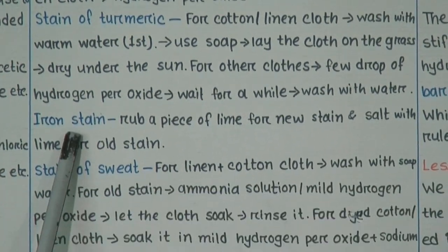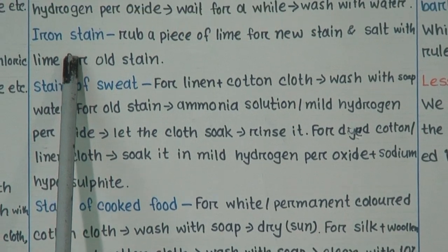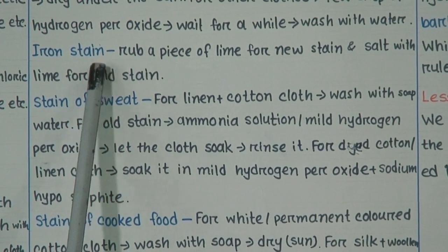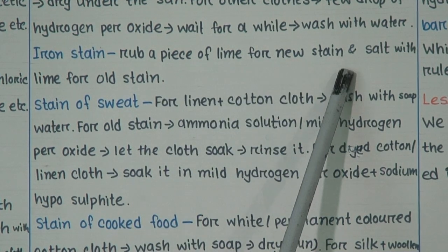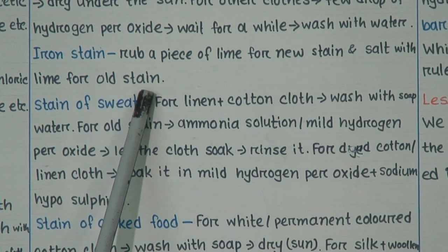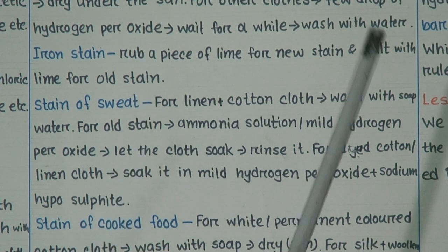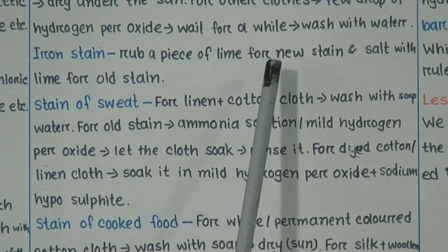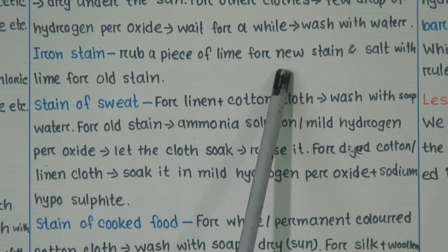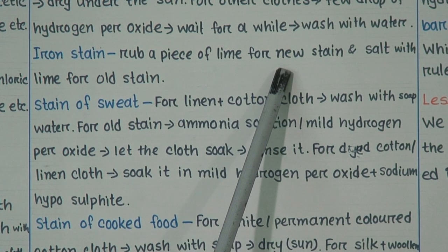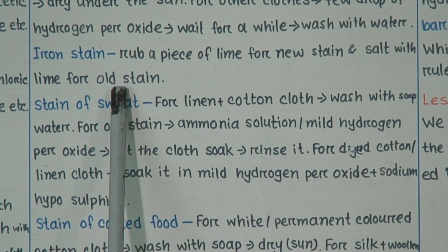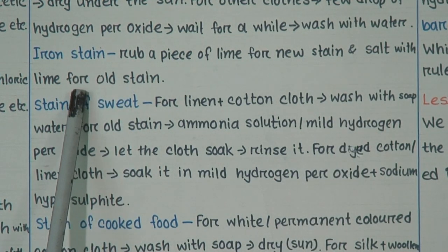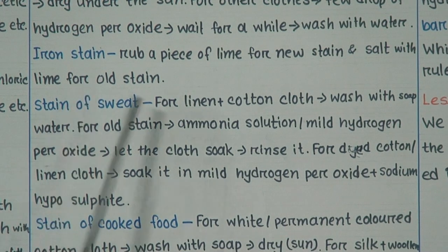For iron stain: if there is a new iron stain on the cloth, rub a piece of lime on it. For old iron stains, use salt with lime on the cloth. In this way you can remove iron stains.